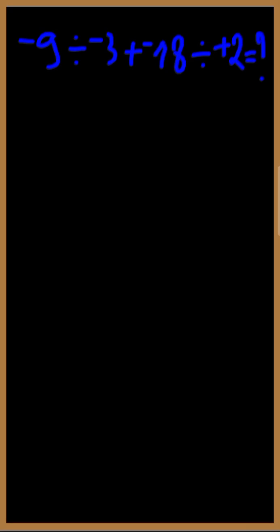Negative 9 divided by negative 3, plus negative 18 divided by positive 2 is equal to — for us to answer this question, we are going to make use of BODMAS.